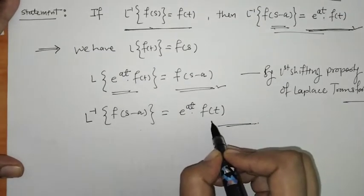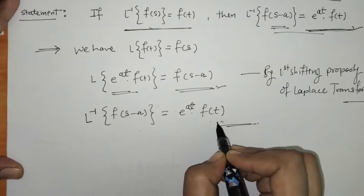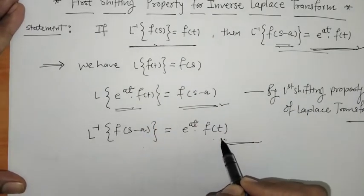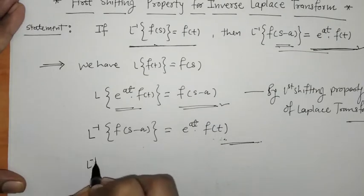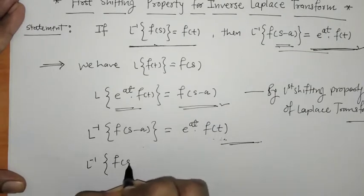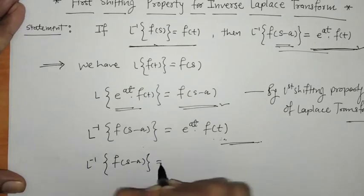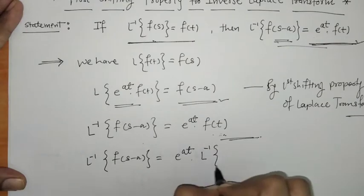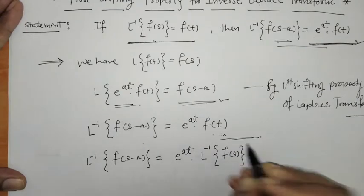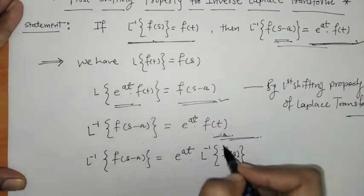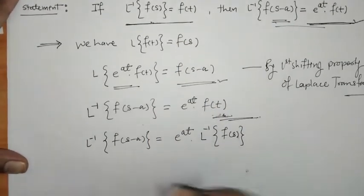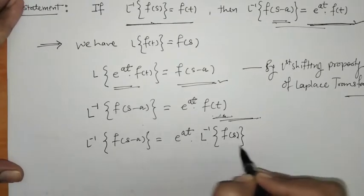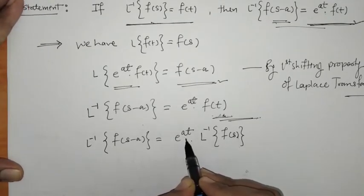Now, f(t) is L⁻¹{F(s)}, the inverse Laplace transform of F(s). So we can write L⁻¹{F(s-a)} = e^(at) · L⁻¹{F(s)}, where a is a constant.